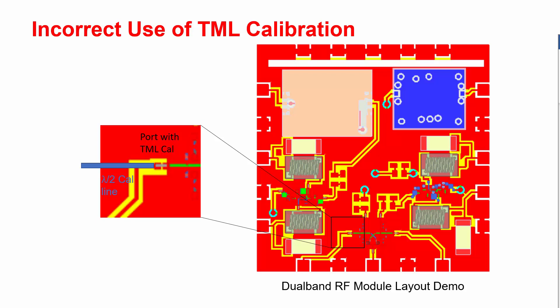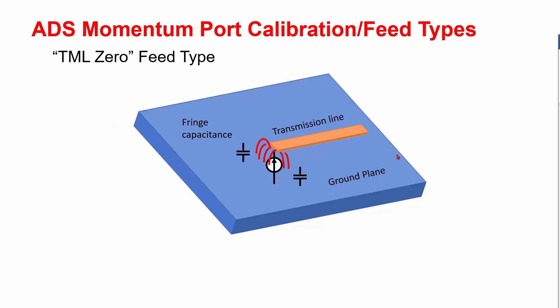This problem leads us to another type of a port with calibration TML0. TML0 means the line is fed by a virtual line with length of 0, so the fringing capacitance can be removed.